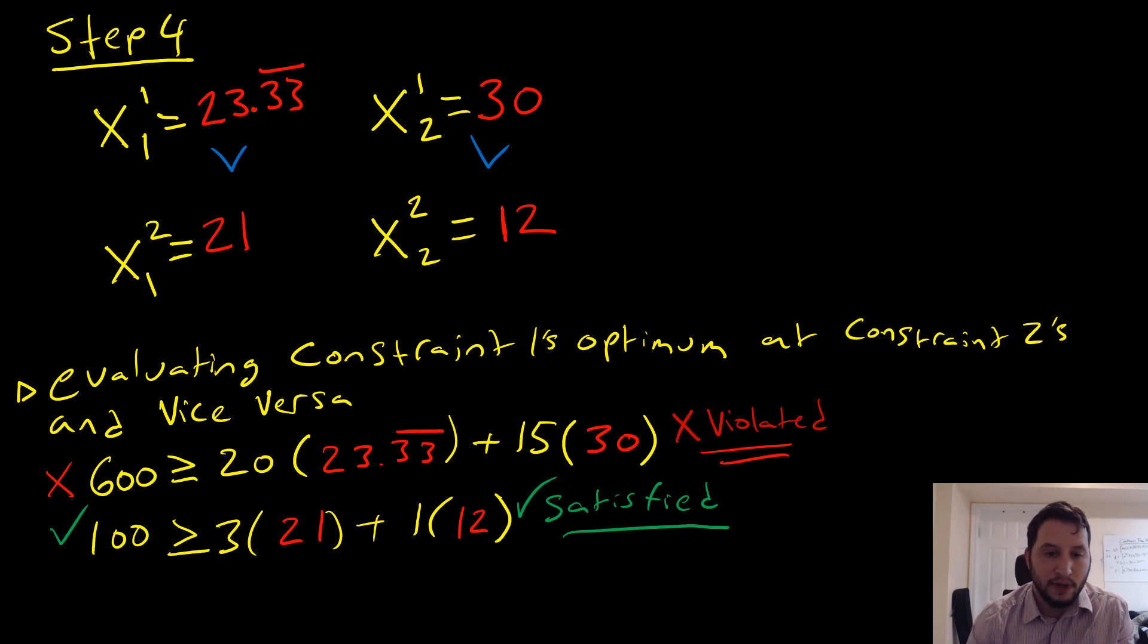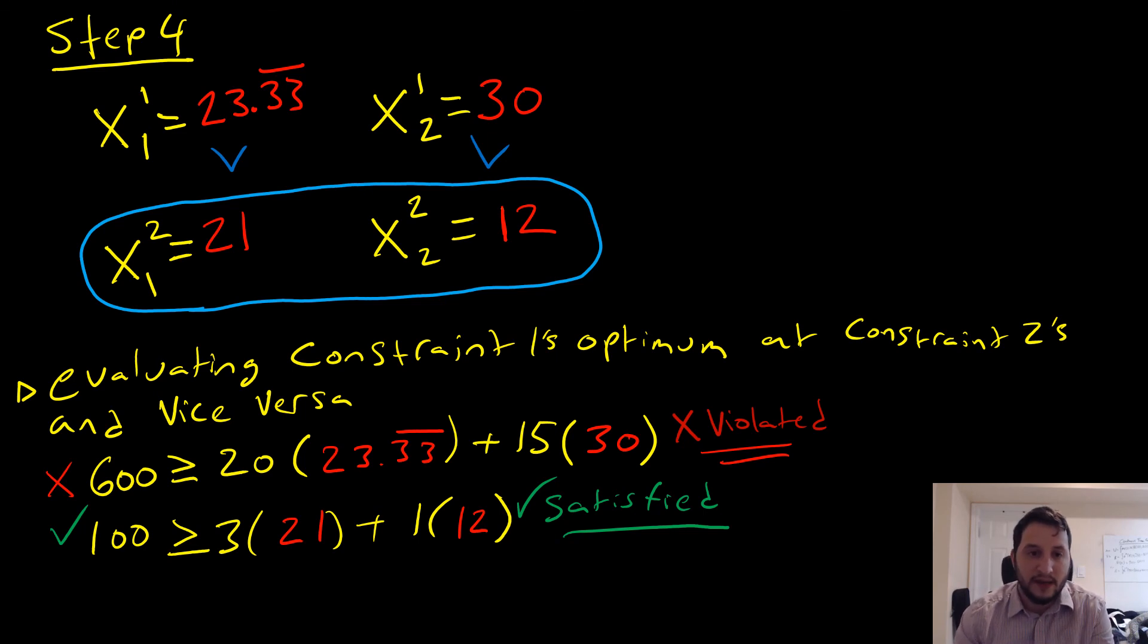that the inputs that we're going to be choosing for our optimum here are going to be these ones down here. So that's the most basic tractable case for utility maximization with two constraints. Let me know what you thought. Take care.